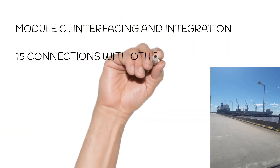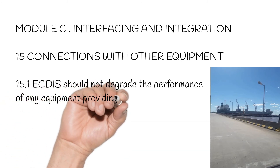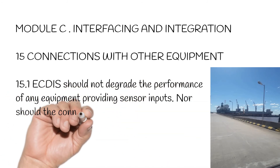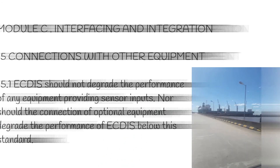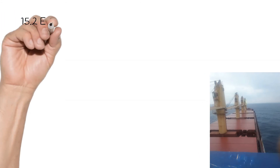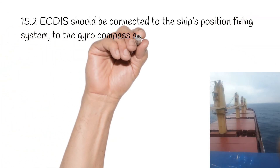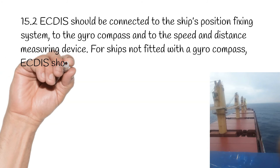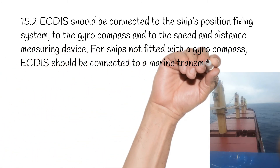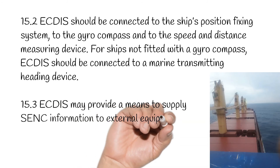Module C: Interfacing and Integration. Section 15: Connections with Other Equipment. 15.1. ECTIS should not degrade the performance of any equipment providing sensor inputs, nor should the connection of optional equipment degrade the performance of ECTIS below the standard. 15.2. ECTIS should be connected to the ship's position fixing system, to the gyrocompass, and to the speed and distance measuring device. For ships not fitted with a gyrocompass, ECTIS should be connected to a marine transmitting heading device. 15.3. ECTIS may provide a means to supply SENC information to external equipment.